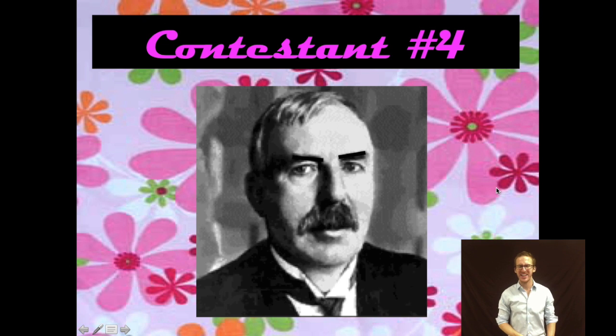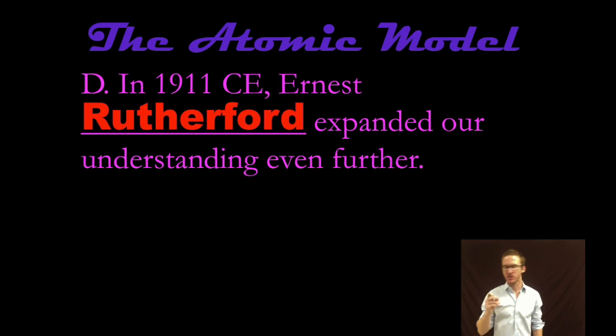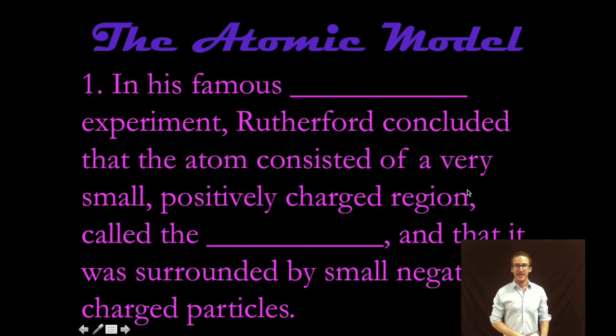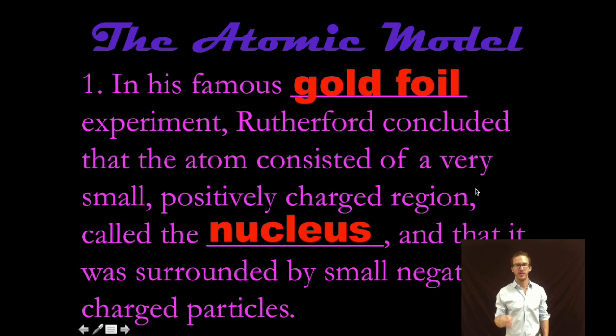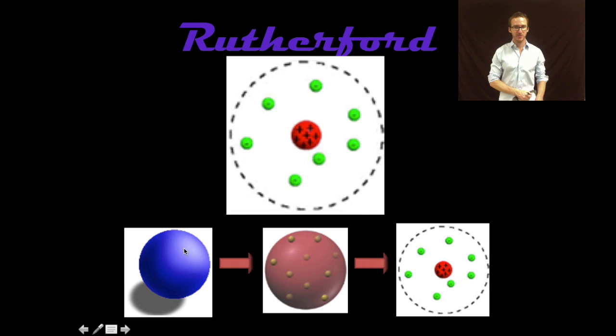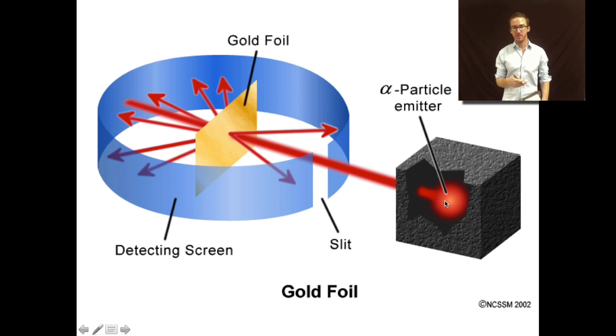Brings us to contestant number four. I like to call him Ernie. Good old Ernest Rutherford did some more experimentation, and again revised our understanding of the structure of the atom. He performed a very famous experiment known as the gold foil experiment, and concluded that the atom actually consisted of a very small region, positively charged region, called the nucleus, and that those negatively charged particles that Thompson discovered, were actually outside of that nucleus. So notice how our model has advanced. Solid, indivisible, solid, divisible. Most of that mass concentrated in the nucleus, while the majority of the atom is just empty space, where those negative particles hang out.